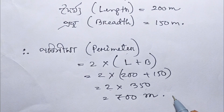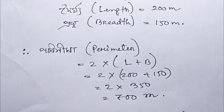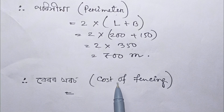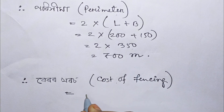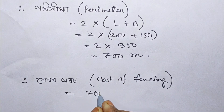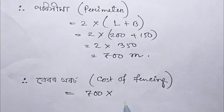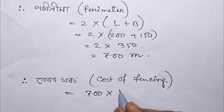The cost of fencing is 700 meters at Rs. 200 per meter.